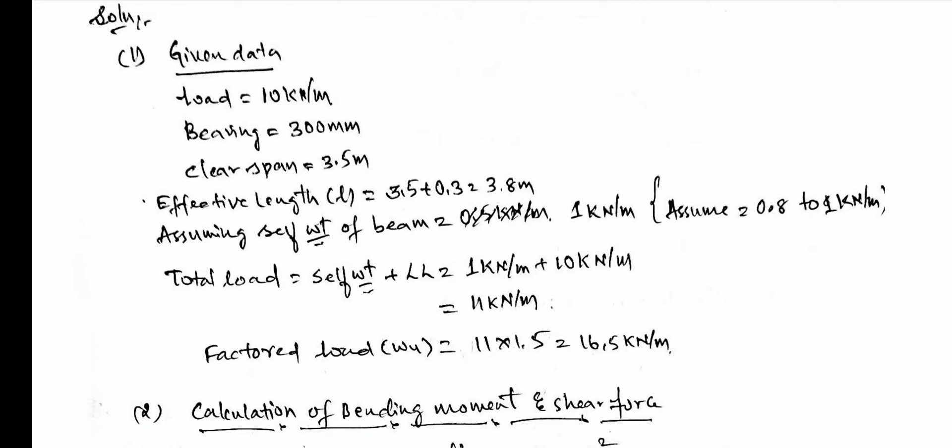Once we get the total working load, we multiply by the factor of safety. The factor of safety is always 1.5. So factored load = 11 × 1.5 = 16.5 kN/m. This is the factored or design load. This completes design step one.